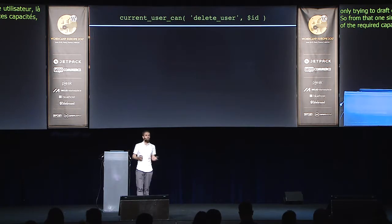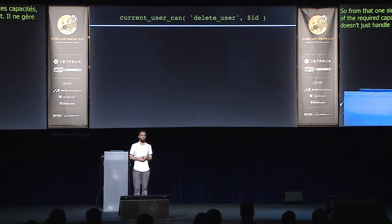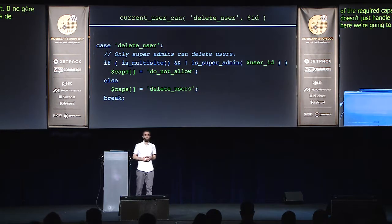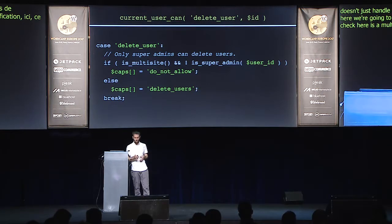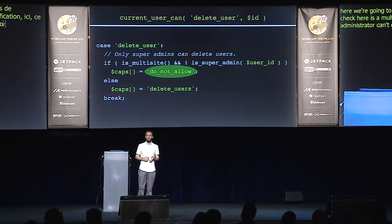map_meta_cap doesn't handle just posts — it handles all capability checks. For example, for delete_user with a user ID, on multi-site a regular administrator can't delete a user, so map_meta_cap checks for multi-site and if the user isn't a super admin, it blocks the ability by adding 'do_not_allow' to the required capabilities. If not using multi-site or the user is a super admin, it just requires the delete_users capability, which by default in WordPress is assigned to just administrators.